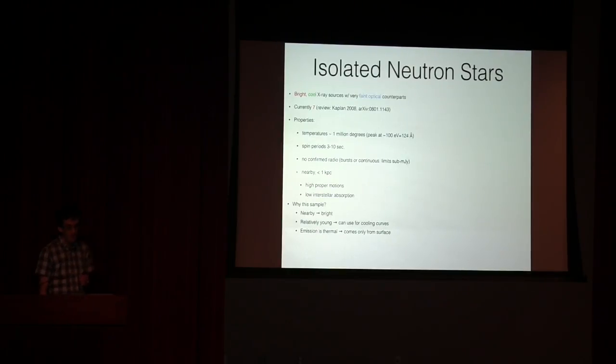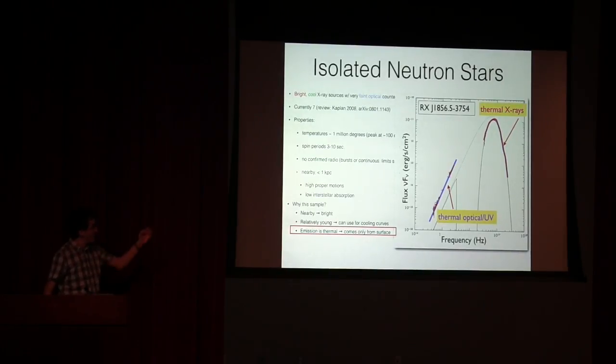They're quite bright, so you get pretty high count rates when you look at them. They're relatively young, so you can use them to understand neutron star cooling and understand the various phase transitions that go on in the interior. And the emission's thermal, not being dominated by the magnetospheric emission that complicates what you see when you look at most pulsars.